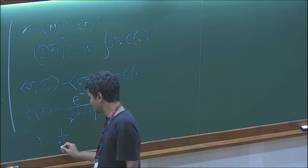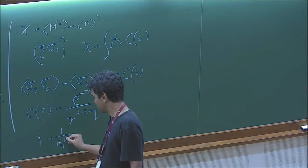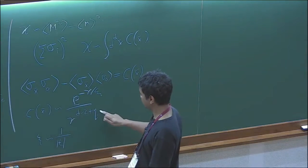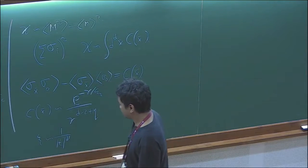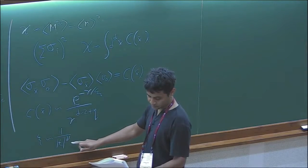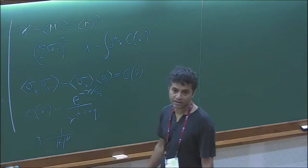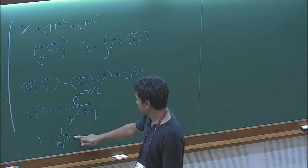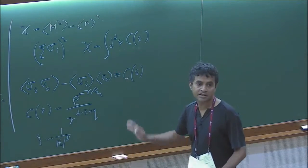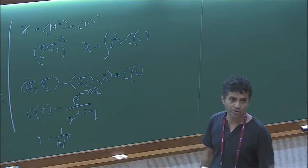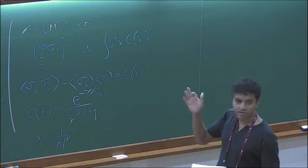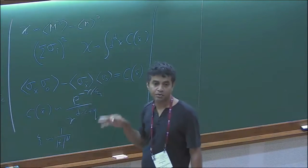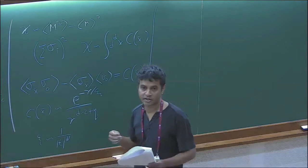At the critical point the correlation length becomes infinite in a certain way, and you can write some power law with exponent nu. There are relations between these various exponents coming from scaling theory, which you'll probably learn in the next week. What we'll do now is calculate all these exponents using mean field theory.